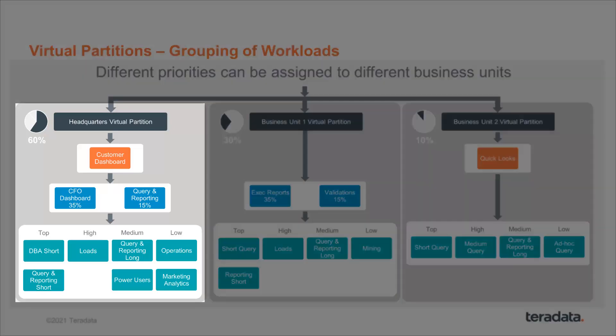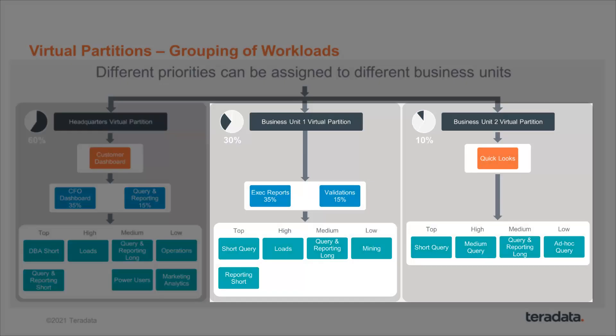So in this case, we create a priority hierarchy just for the headquarters virtual partition, and the whole partition will get 60% of the platform resources. Then the business units get a smaller percent, and within those business units, they can have their own priority hierarchies drawing from that virtual partition percentage.